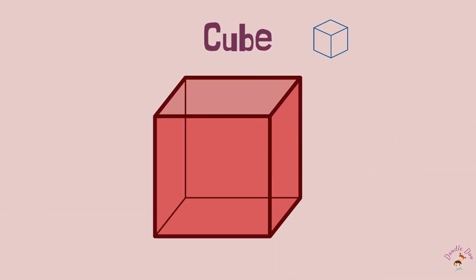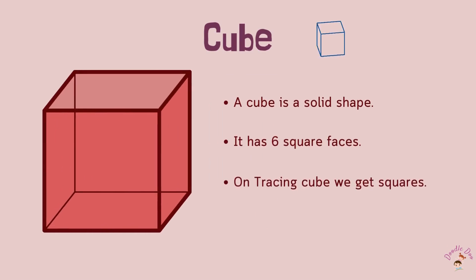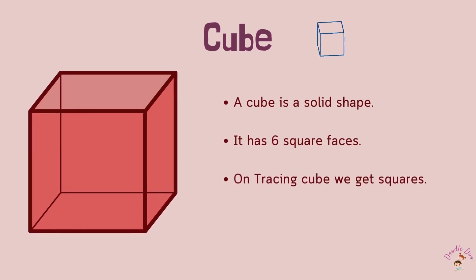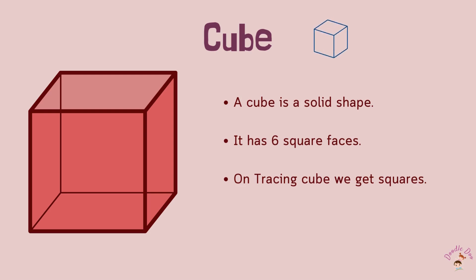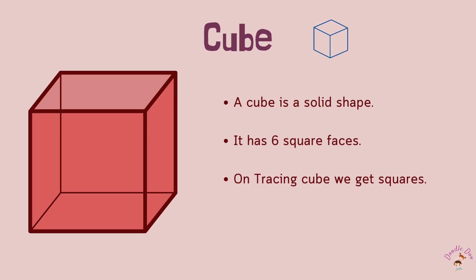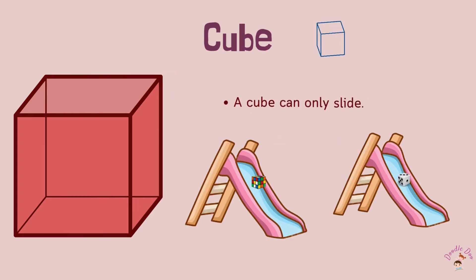Cube. Cube is a solid shape. It has 6 square faces. On tracing a cube, we get a square. A cube can only slide.